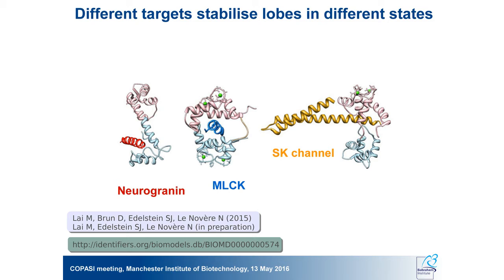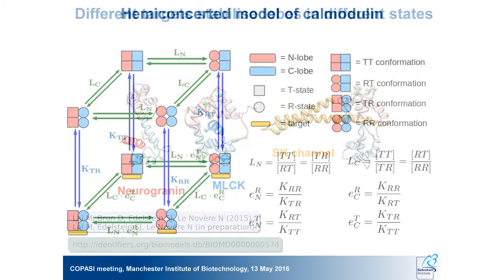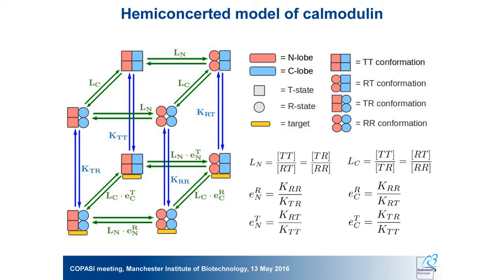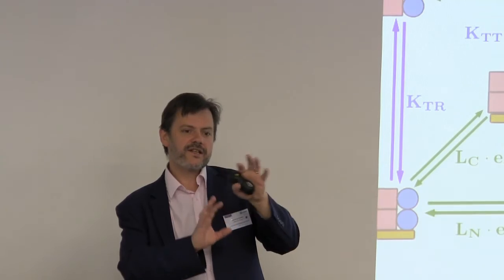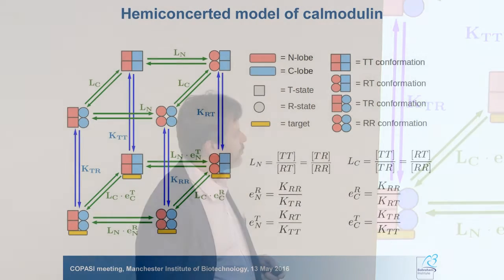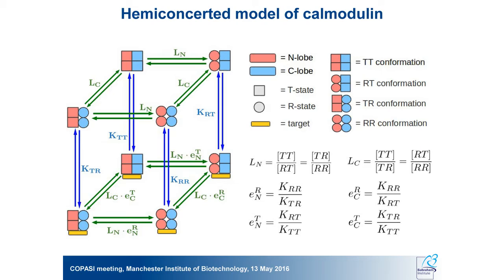There are also unusual structures, such as a sodium channel that has two binding sites for calmodulin — one that binds calmodulin in the R-state, the other in the T-state — producing a structure where one lobe of calmodulin is in the R-state and one lobe is in the T-state. So we need a semi-concerted model of calmodulin: each lobe is internally concerted with its two EF-hands always in the same state, but the two lobes can switch somewhat independently while still influencing each other.